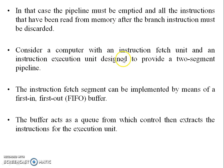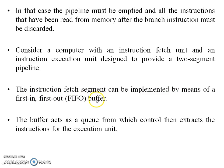Consider a computer with an instruction fetch unit and an instruction execute unit designed to provide a two-segment pipeline. In this topic we will discuss about a four-segment pipeline. The instruction fetch segment can be implemented by means of a first-in first-out, or FIFO, buffer. The buffer acts as a queue from which the control unit extracts instructions for the execution unit.